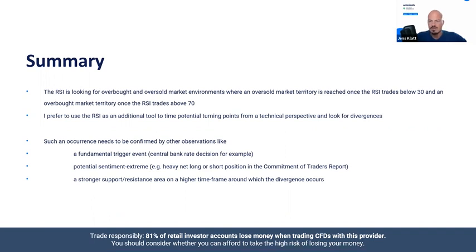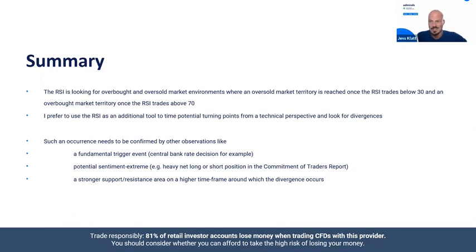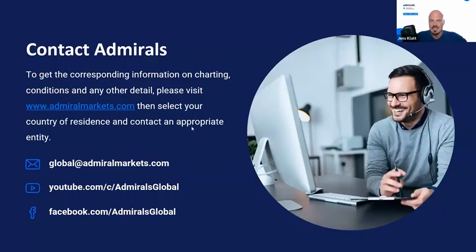Such divergence occurrences - a lower low in the chart with a higher low in the RSI for a bullish divergence, or a higher high in the chart not confirmed by a higher high in the RSI for a bearish divergence - are even stronger when confirmed by other observations: fundamental trigger events like central bank rate decisions, employment reports, earnings releases. Sentiment extremes from the Commitment of Traders report - available for free on barchart.com - and important technical levels like strong support/resistance areas on higher time frames all add to the signal.